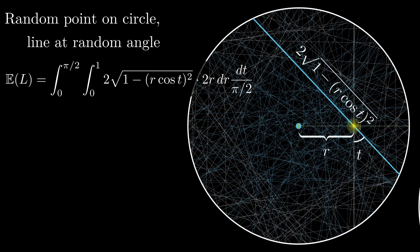We can rotate the point so that it lies on the vertical line through the circle center and draw a horizontal line through this point. Taking t to be the angle between the horizontal line and the random line we draw to create the chord, and with some simple geometry, we can show that the length of the chord is twice the square root of 1 minus (r cos t)². The expected value in this case is the integral of this quantity times 2r dr times dt/(π/2), as r ranges from 0 to 1 and t ranges from 0 to π/2, which evaluates to 16/(3π) or about 1.697.